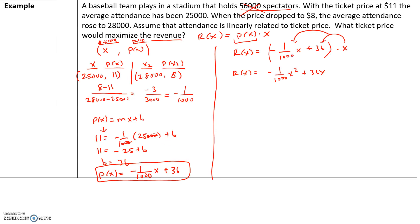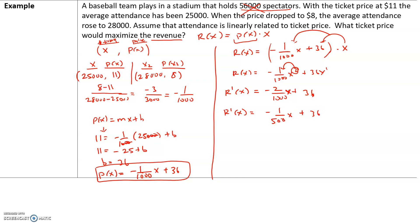To maximize revenue, we need to find where the first derivative equals zero. R'(x): multiplying 2 by −1/1,000 gives −2/1,000, which simplifies to −1/500, so R'(x) = −(1/500)x + 36. Set that equal to zero: −(1/500)x = −36.